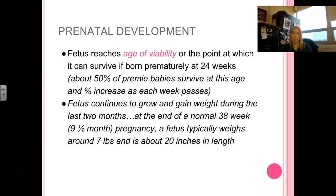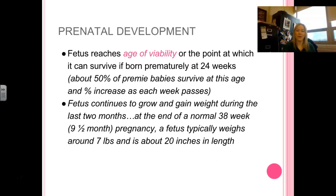Fetuses will grow and gain weight during the last two months. At the end of a normal 38-week pregnancy — roughly 9.5 months — they're going to weigh around 7 pounds and be about 20 inches in length. I gave birth at 38 weeks, so Eliza was pretty early for a first pregnancy. Most first pregnancies go to that 40-week point, possibly even 41 weeks. She was born at 6 pounds 6 ounces and was 18.5 to 19 inches, so she was pretty small.